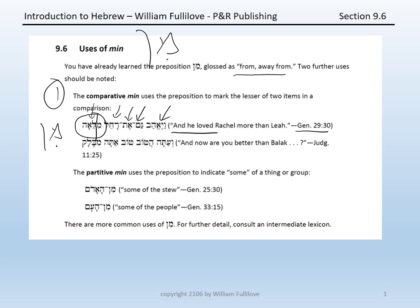In Judges 11:25, we have v'atah ha-tov tov-atah mi-balak. V' is the connector 'and,' atah means 'now,' and ha-tov has the interrogative he at the front — he's asking a question. The form mi-balak has a min with the nun having assimilated, causing a dagesh forte in the name Balak. So the phrase means 'and now, are you better than Balak?' — the lesser of the two is marked by the comparative min.